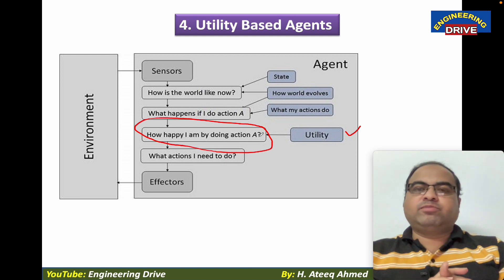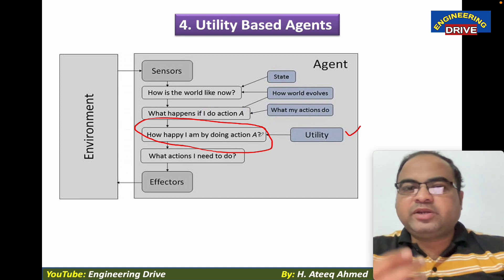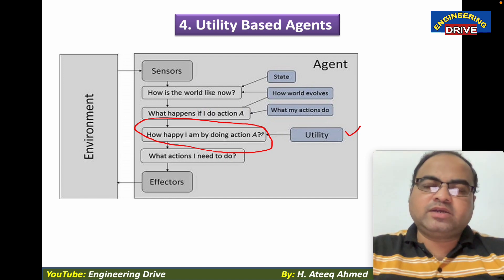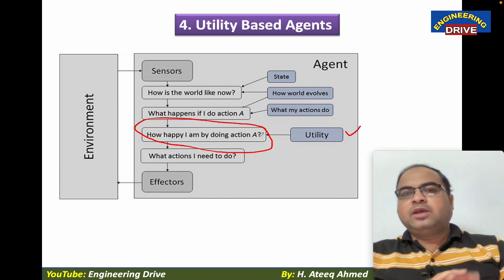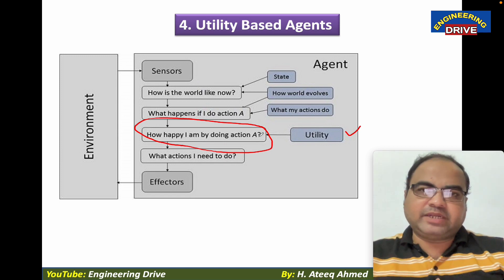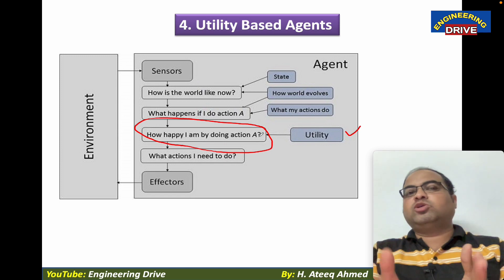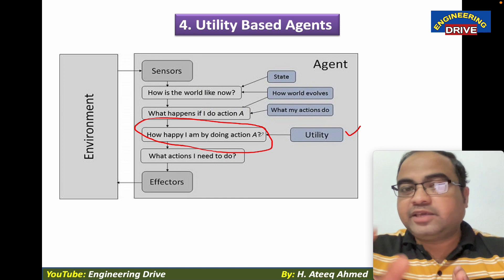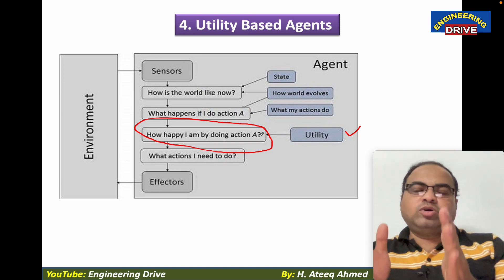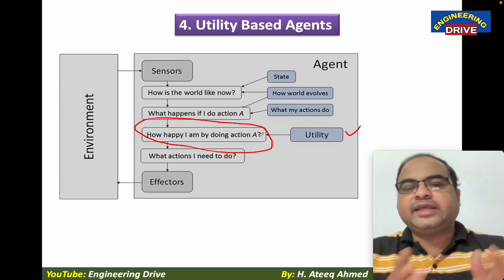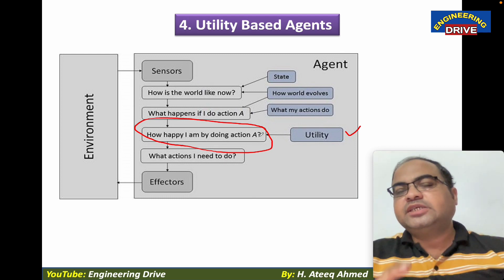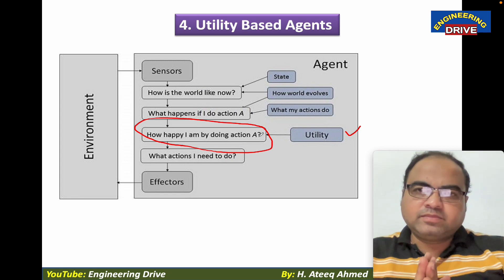Let me give a real-time example. Imagine parents want to admit their son to an engineering college. The parents' suggestion is that the student should take civil engineering, but the student has interest in computer science and engineering. With this example, I am showing you the difference between a goal-based agent and a utility-based agent.